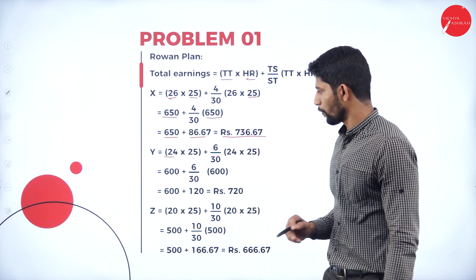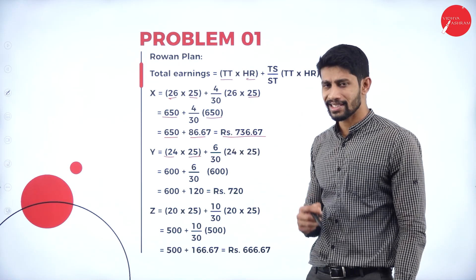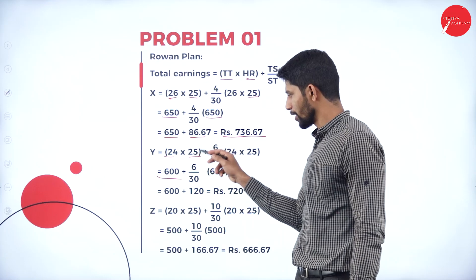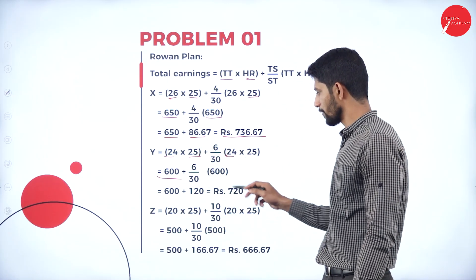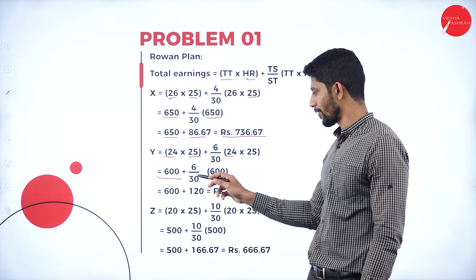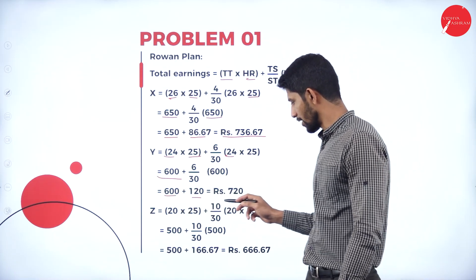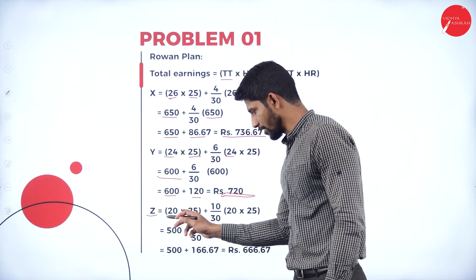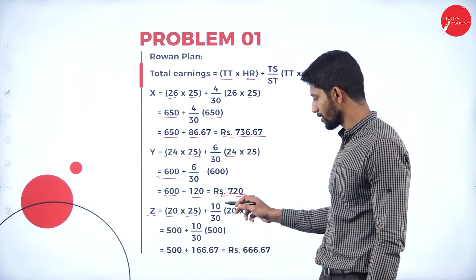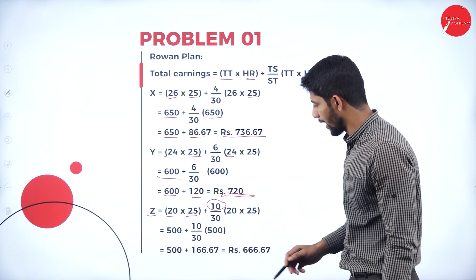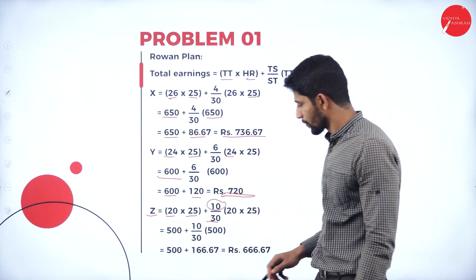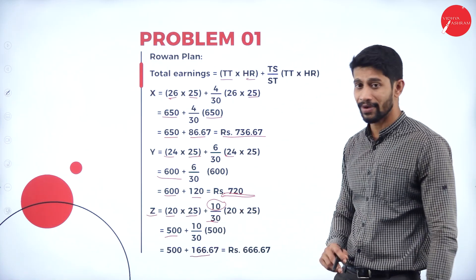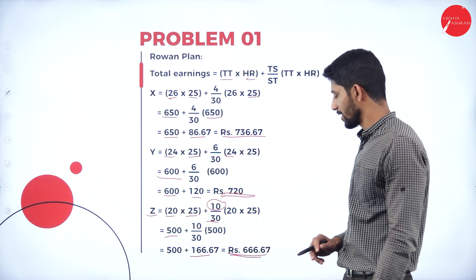Next, Mr. Y: time taken 24 hours, hourly rate 25, time saved 6 hours, standard time 30 hours. So 24 × 25 = 600, plus (6 ÷ 30) × 600 = 120. Therefore 600 + 120 = 720 rupees is the earning of Mr. Y under Rowan Plan. Next, Mr. Z: time taken 20 hours into 25 = 500, plus (10 ÷ 30) × 500 = 166.67. Total = 666.67 rupees.